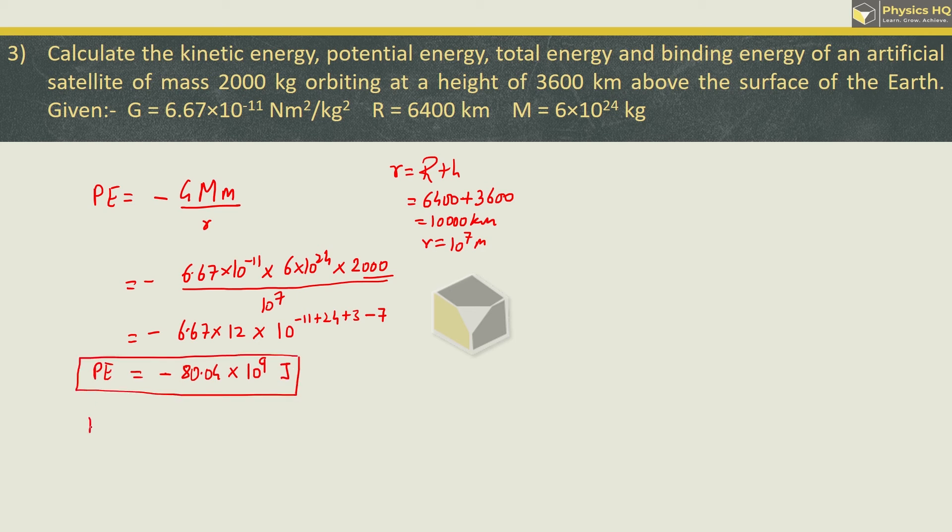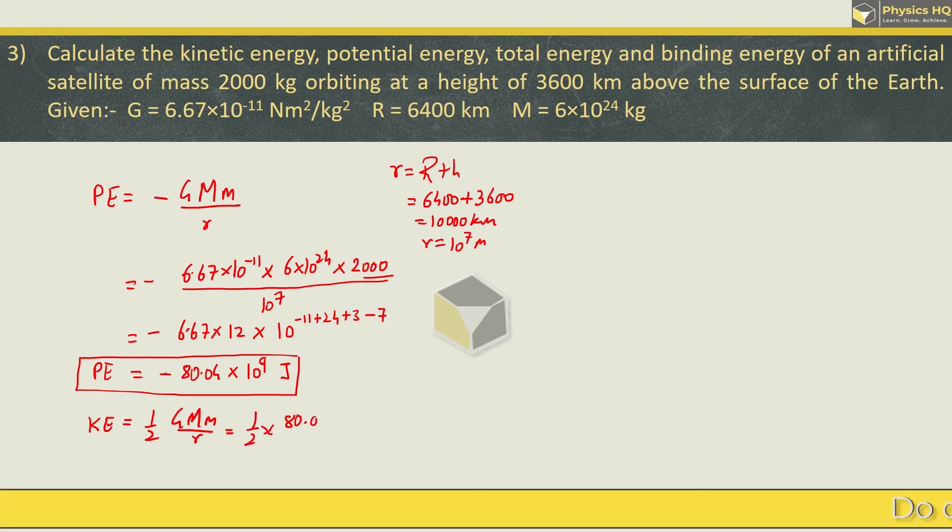Next let us find the kinetic energy. Kinetic energy is given by half GMm upon R. If you can see here, GMm upon R we have already calculated. So kinetic energy we easily get. GMm upon R we got as 80.04 into 10^9, so kinetic energy is 40.02 into 10^9 joule.